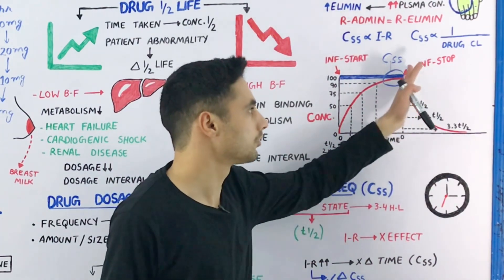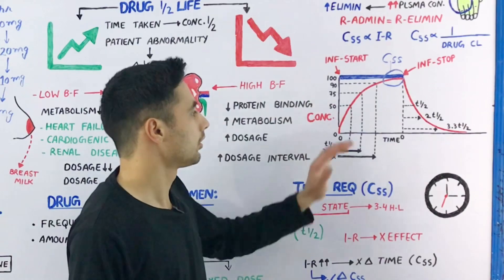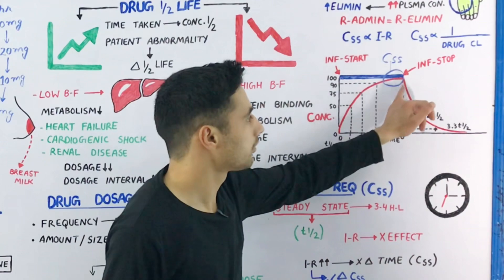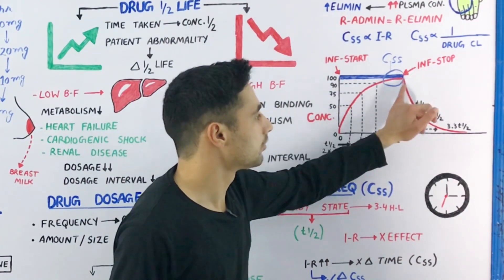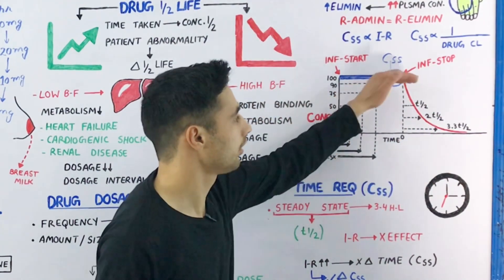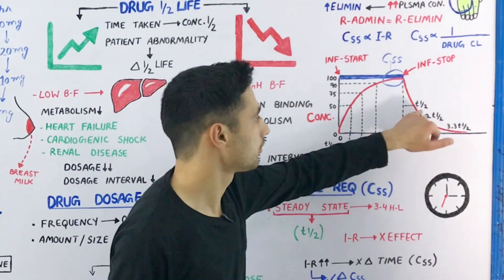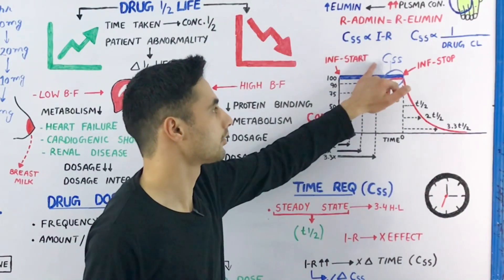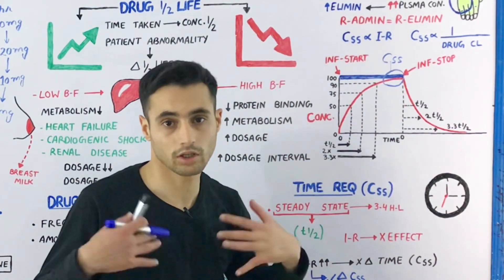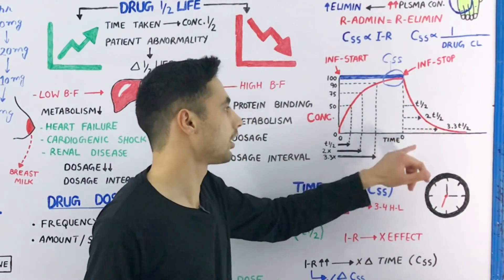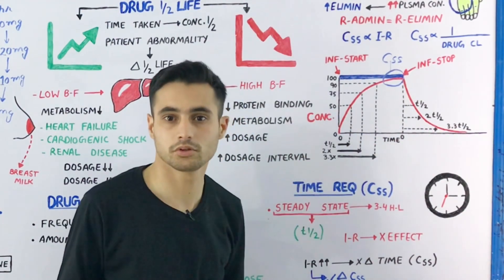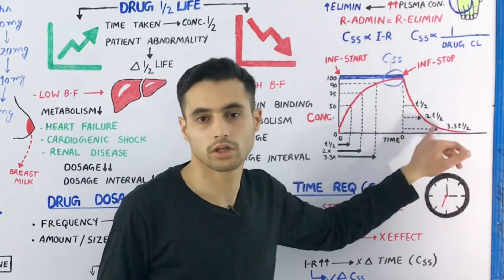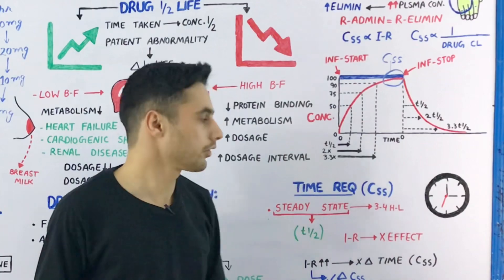When you stop infusing the drug, it follows the same pattern in reverse. After the first half-life, 50% of the steady state concentration — meaning 50% of the drug — remains in the body. After the second half-life, only 25% remains. After the third or fourth half-life, all of the drug is eliminated from the body.